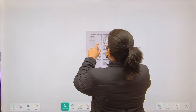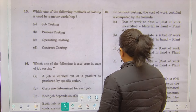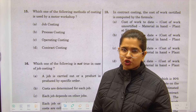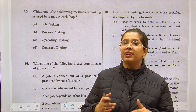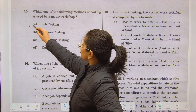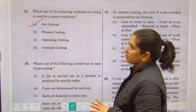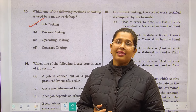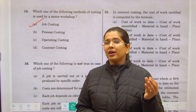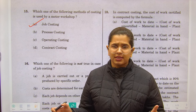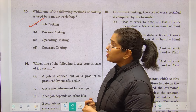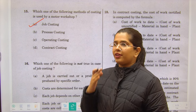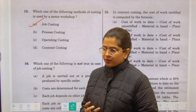Which costing method is used by a motor workshop? In a motor workshop, different clients come and every job they require is different. So every job and every client is different — therefore job costing is used. Process costing relates to the manufacturing process; contract costing involves one significant contract; operating costing applies to services like a bus transport business. For a motor workshop with many small, varied client jobs, job costing is correct.